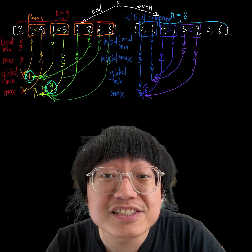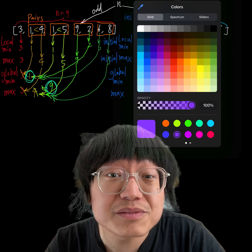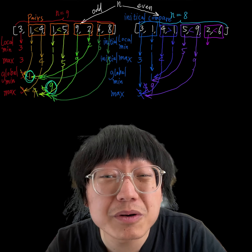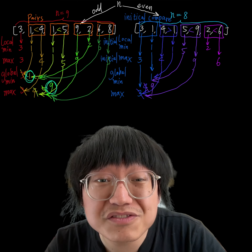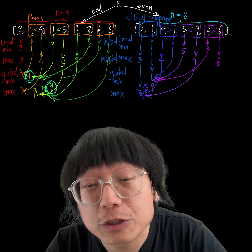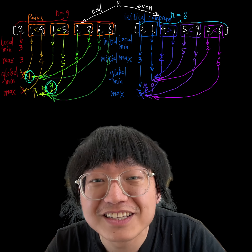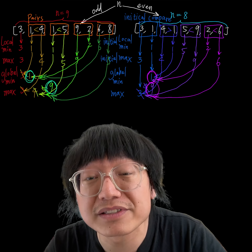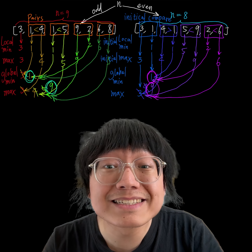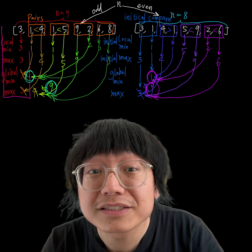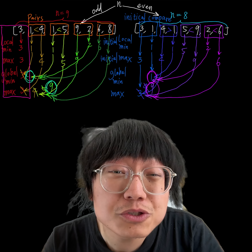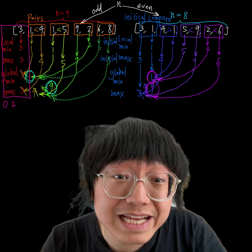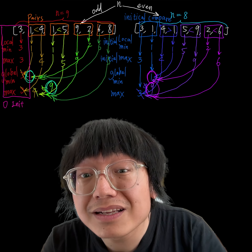We then process the remaining elements in pairs — (1, 4), (5, 9), and (2, 6) — with similar steps as the odd scenario, starting with the third and fourth elements. After setting the initial value based on the first comparison, we can process the elements in pairs. This method optimizes the number of comparisons needed to find the minimum and maximum values, and is a very efficient approach that uses fewer comparisons than checking each element against the current minimum and maximum separately.